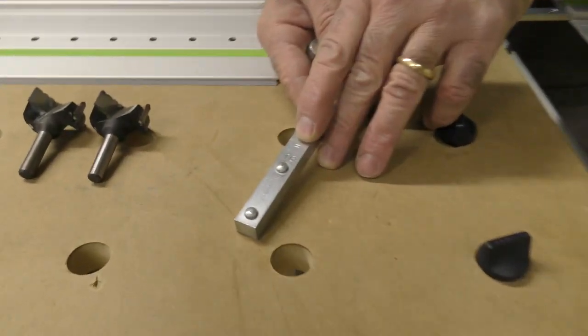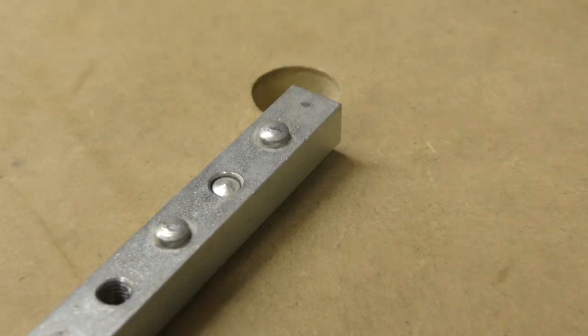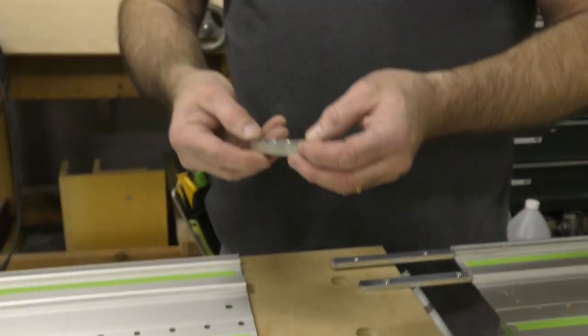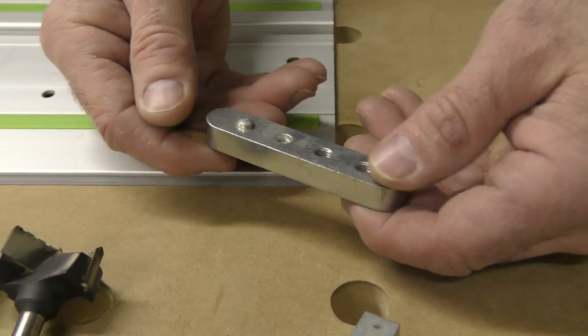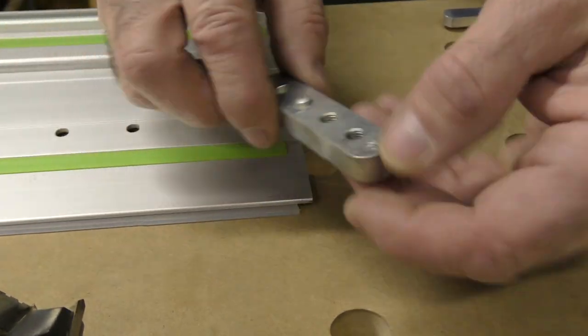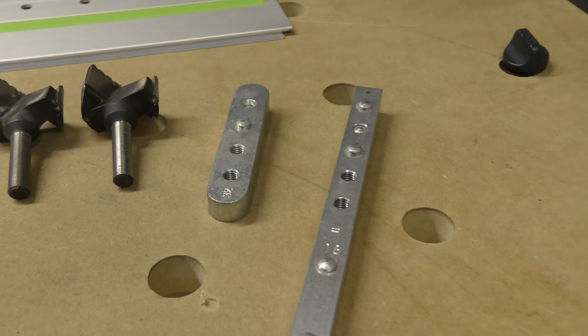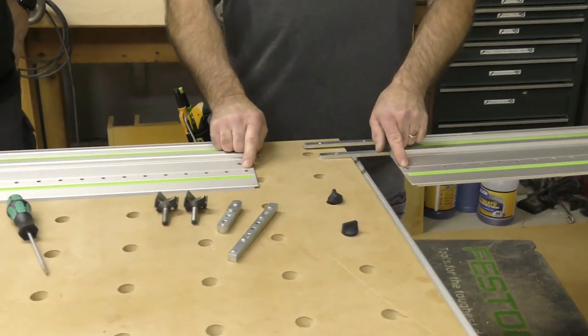This end stop right here that I showed you a minute ago, see how it has the little hash marks there? When the LF32 system first came out, the end stop was right here. And some people out there may have this end stop and you don't have this. So instead of going out and getting the new one, I'm going to show you how I used to set up for the continuation of these.